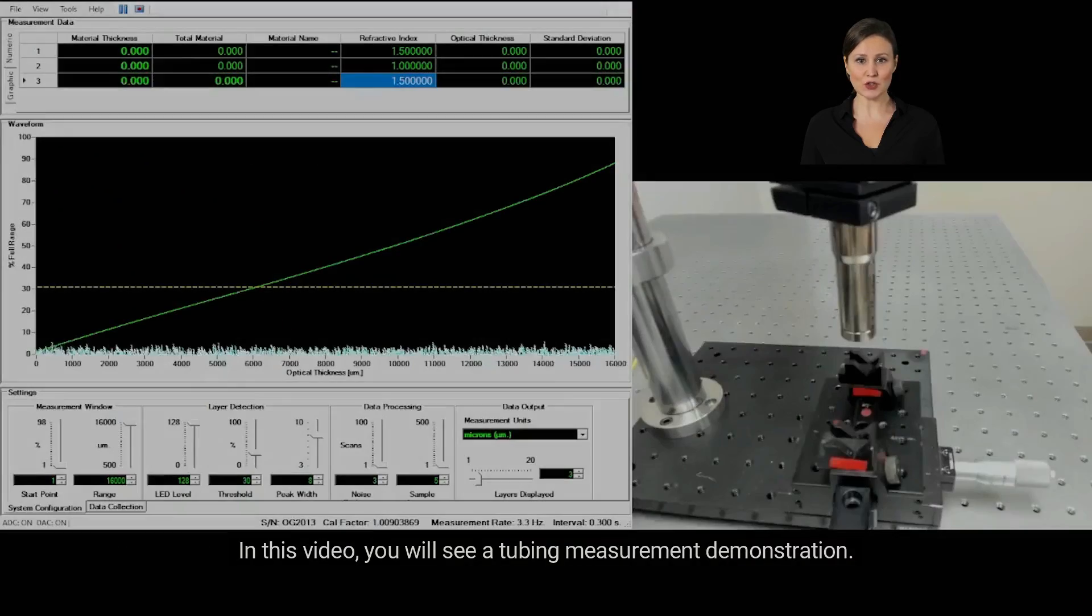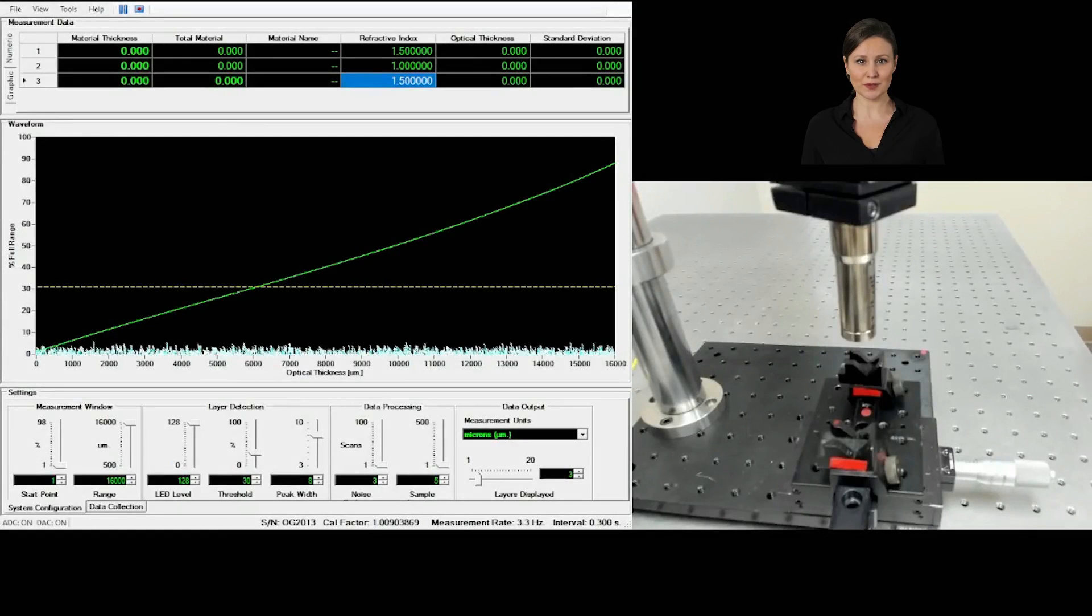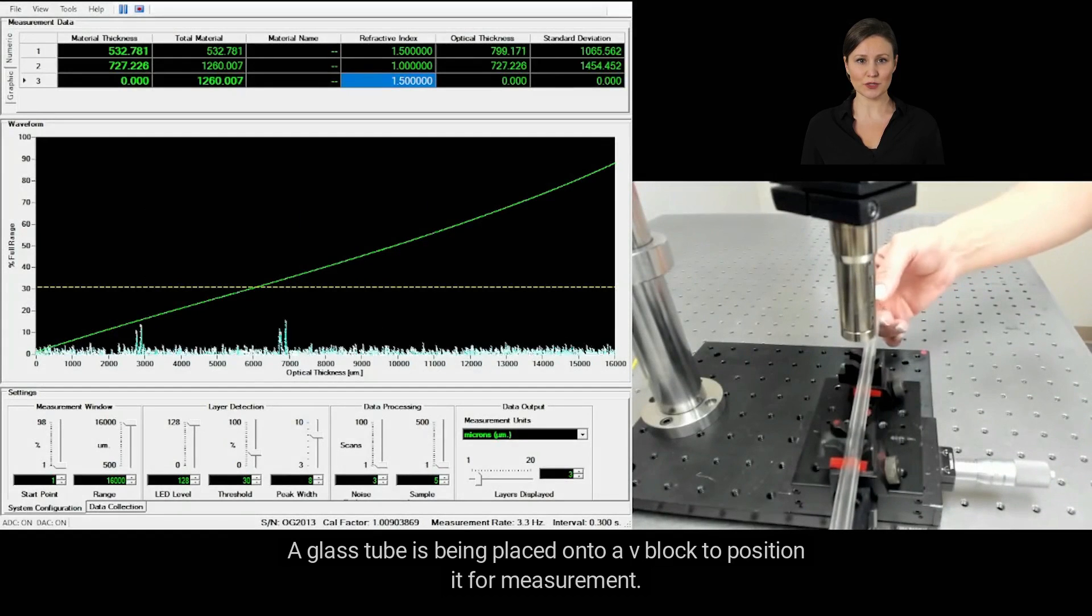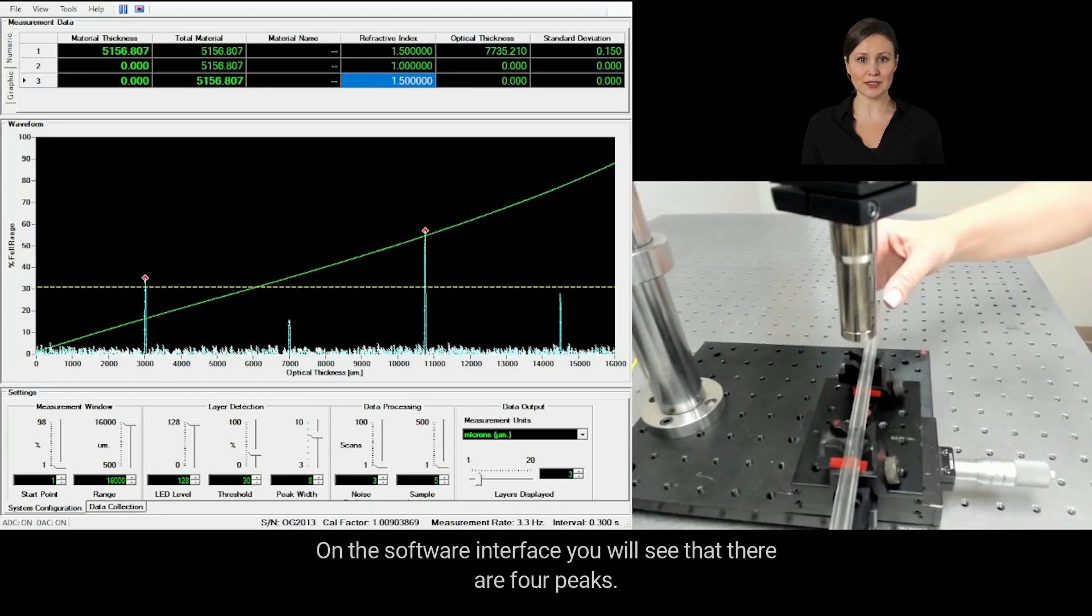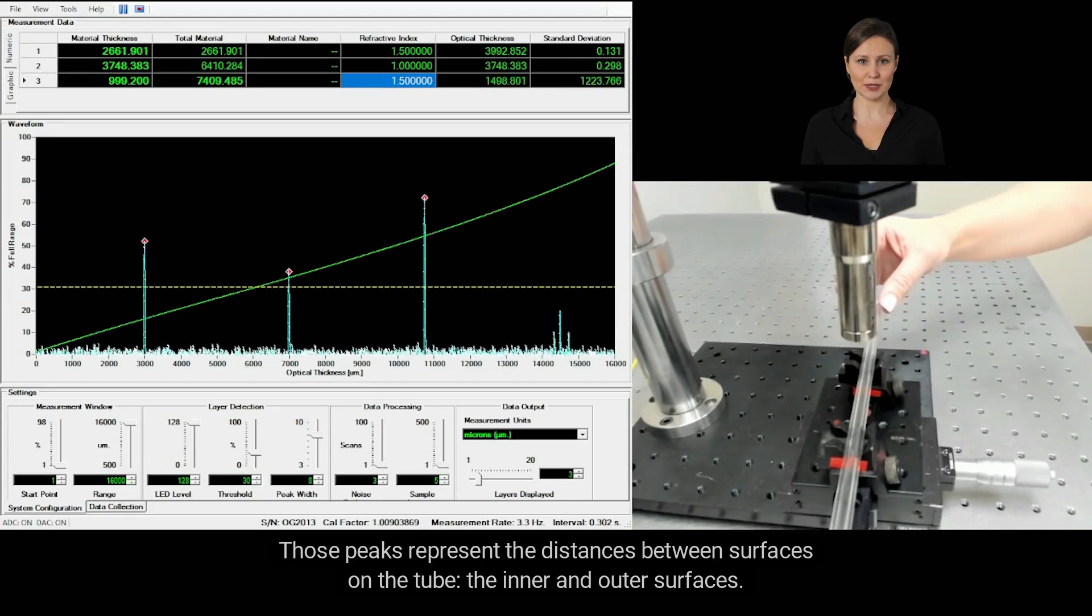In this video, you will see a tubing measurement demonstration. A glass tube is being placed onto a V-block to position it for measurement. On the software interface you will see that there are four peaks. Those peaks represent the distances between surfaces on the tube.